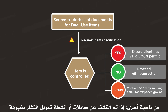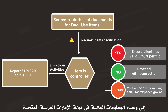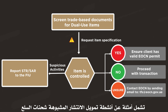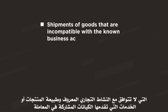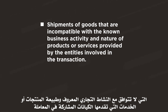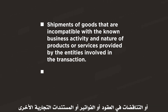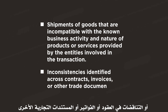On the other hand, if the customer due diligence measures reveal suspicious proliferation financing transactions or activities, you should consider reporting an STR or SAR to the UAE Financial Intelligence Unit. Examples of suspicious PF activities include shipments of goods that are incompatible with the known business activity and nature of products or services provided by the entities involved in the transaction, or inconsistencies identified across contracts, invoices, or other trade documents.